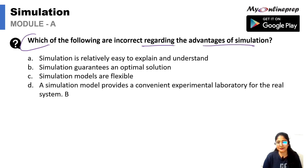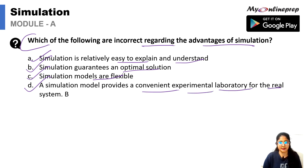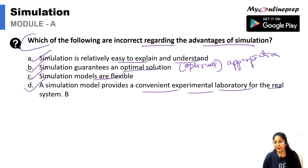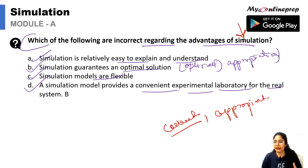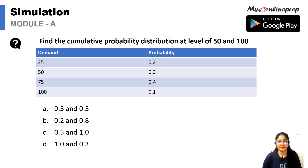Which of the following is incorrect regarding the advantages of simulation? Options include: simulation is relatively easy to explain and understand, it guarantees an optimal solution, it is a flexible model, or it provides a convenient experimental laboratory for the real system. The incorrect one is that it guarantees an optimal solution. Simulation guarantees an appropriate solution, not optimal — there is a difference between appropriate and optimal.